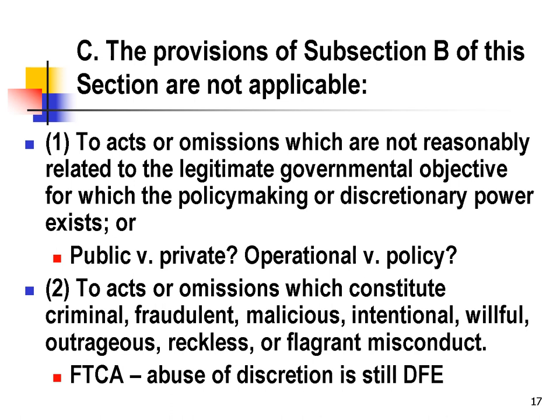Section C modifies subsection B and creates exceptions. First, acts or omissions which are not reasonably related to the legitimate government objective for which the policy-making or discretionary power exists. One can think of this as illegitimate actions by the government, or as actions which are not uniquely government actions — i.e., the public versus private distinction. In Louisiana, this is often also called operational versus policy choices. The courts look at what the agency is doing, and if it's just carrying out day-to-day activities, that's not a policy decision under the State Tort Claims Act.